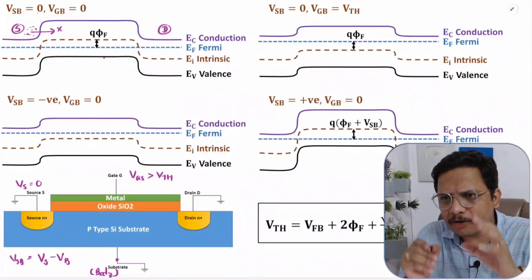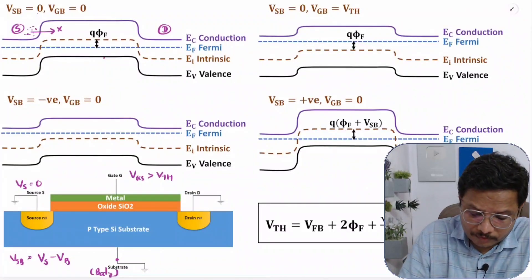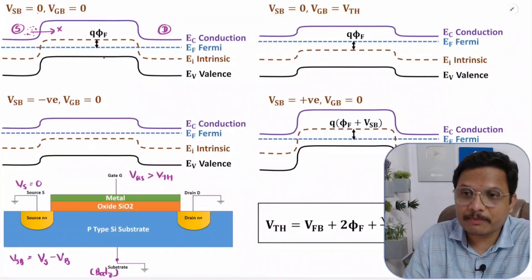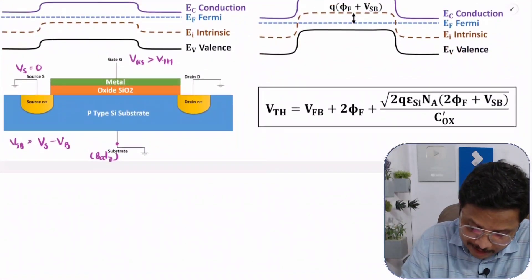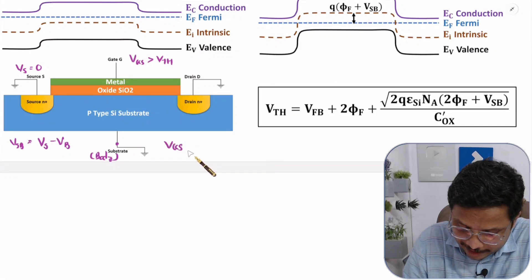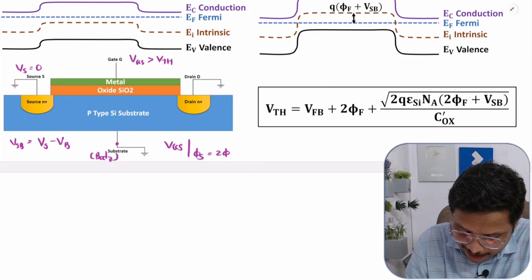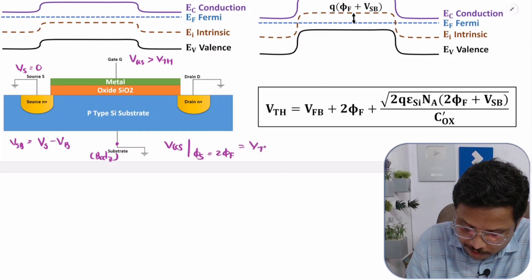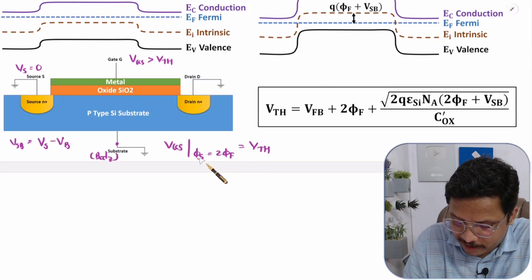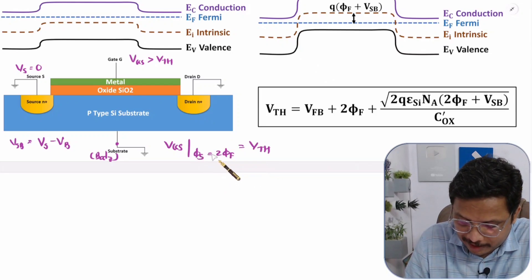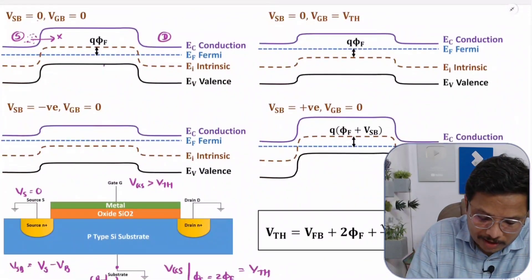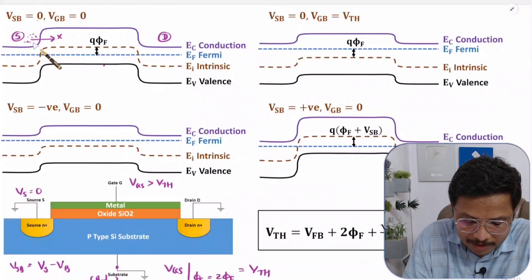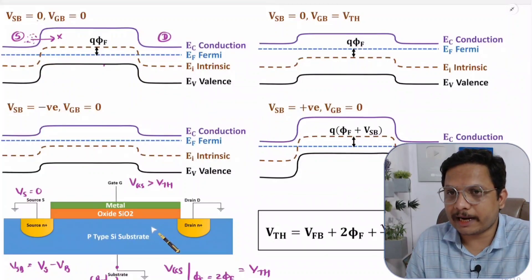There is high resistance currently. The threshold voltage, by basic definition, is the VGS at which surface potential equals 2φf. Right now we are applying zero gate voltage, so there is no formation of an inversion layer.